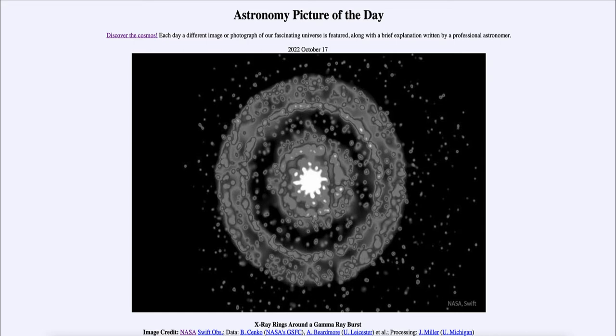A gamma ray burst is one of the most intense explosions that can happen in the universe. Gamma rays are the very highest form of electromagnetic radiation, which includes visible light that we're used to seeing, but much much more energetic.